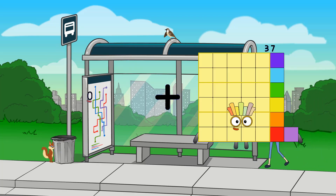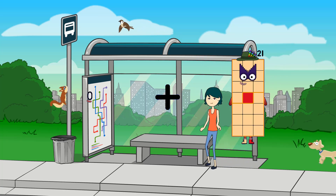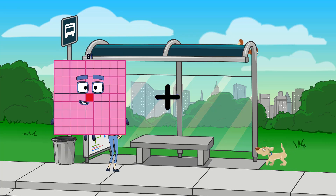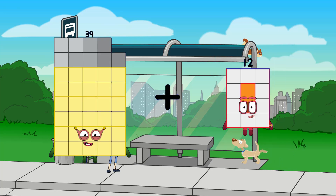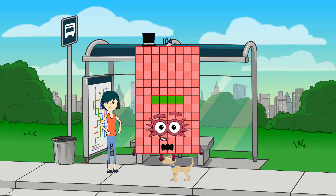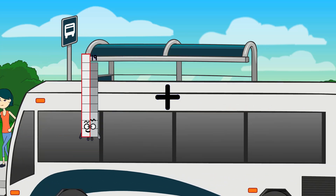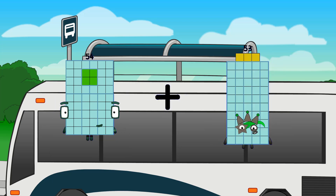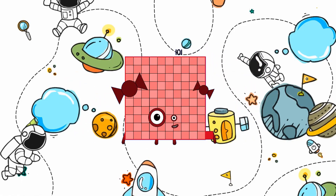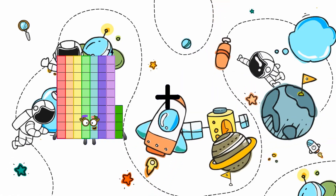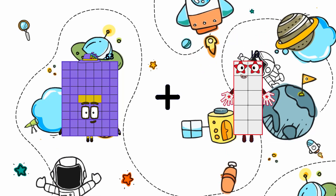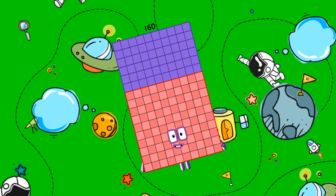0 plus 2 equals 2. 39 plus 65 equals 104. 54 plus 47 equals 101. 63 plus 97 equals 160.